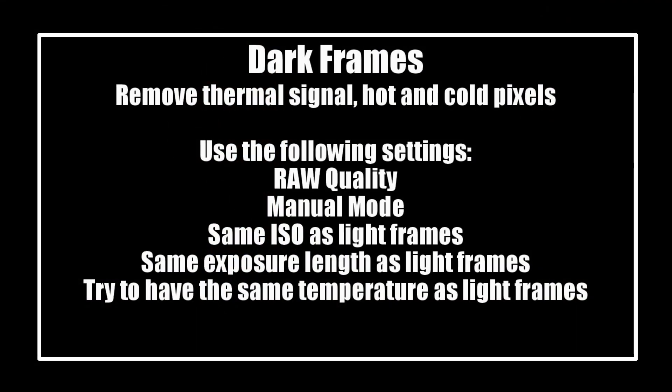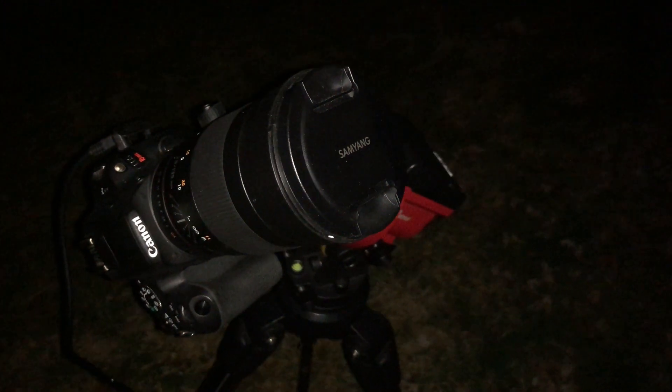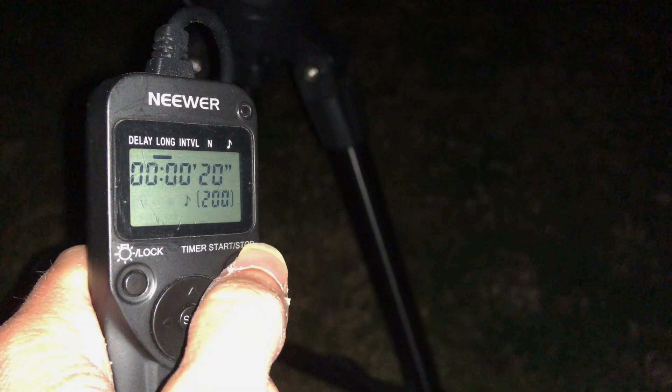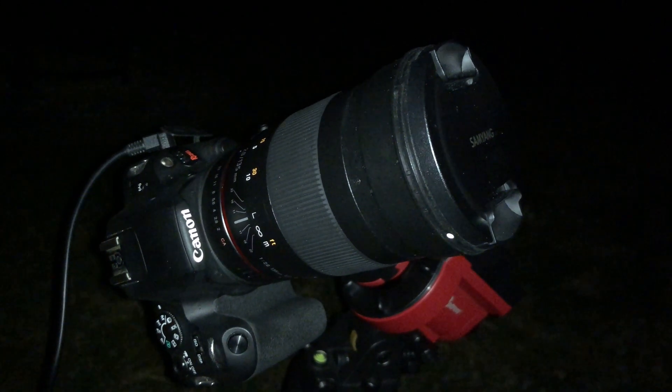Finally, we end our night with dark frames. These are used to improve our image by removing the thermal signal and hot and cold pixels that may have showed up throughout the evening. Like bias frames, you want to make sure your lens cap is on so that no light hits your sensor. But unlike bias frames, you want your exposure length to be the exact same as the light frames that were captured earlier in the evening. I would suggest you keep your equipment set up just as it was outside and use your remote shutter release trigger to capture your dark frames at the exact same length as your light frames. I normally try to take between 75 and 150 dark frames — it just depends on how long the exposure times are, the temperature changes outside, and honestly what time I want to get to bed that evening.